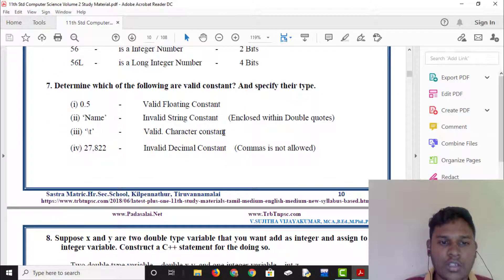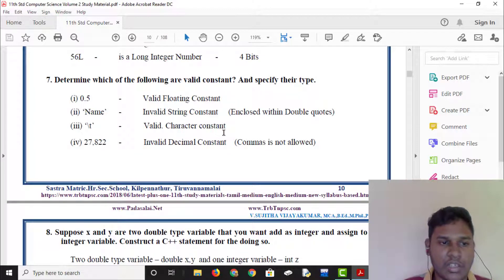Determine which of the following are valid constants. Specify their type. 0.5 is a floating constant. Single quotes is a name. This is invalid string constant. Double quotes is valid string constant. Single quotes is valid. Single quotes is a character. With 27,822.